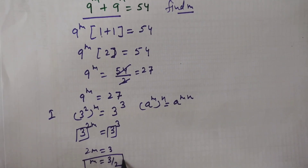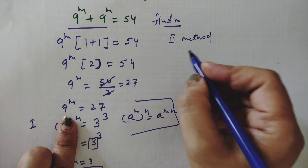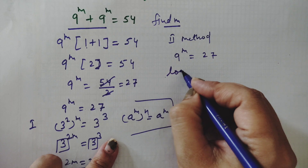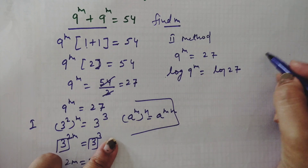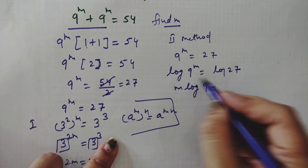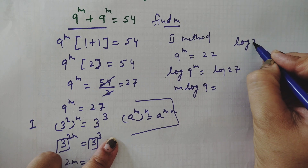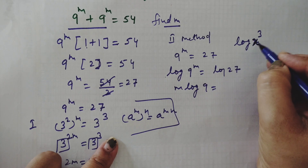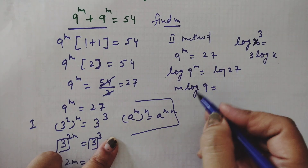So m equals 3 by 2. That is the answer from method 1. For the second method, we take 9^m equals 27 and apply log to both sides: log(9^m) equals log(27). Using the log power rule, the exponent m comes in front: m times log 9 equals log 27.